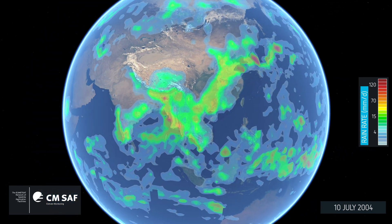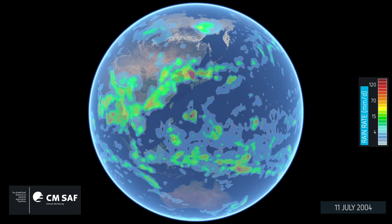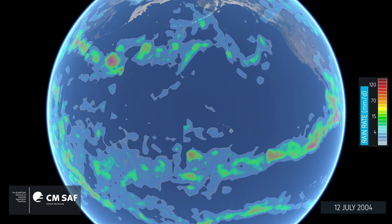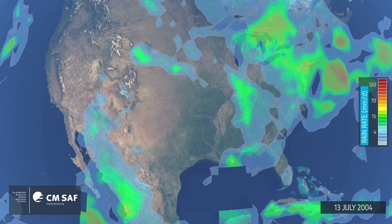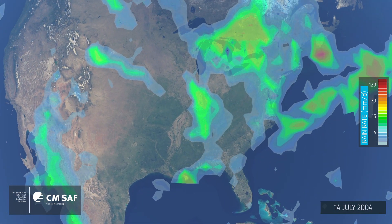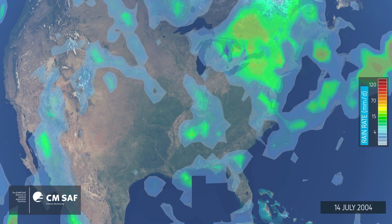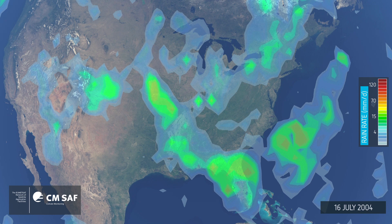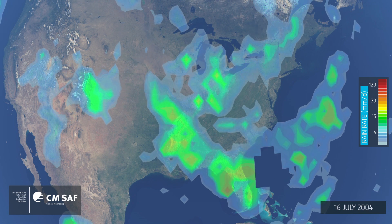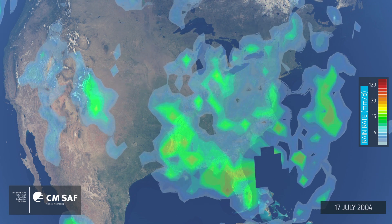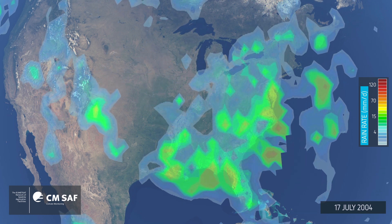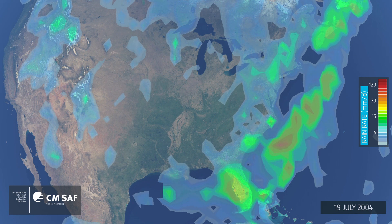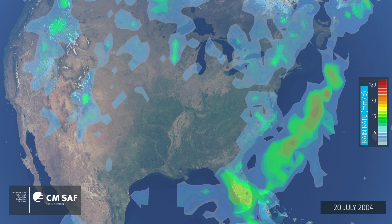Leaving the monsoon, we travel east across the Pacific to the central United States. Here we can see a cluster of storms bringing heavy rain to the Ohio Valley. You can also see in the western Atlantic a storm system there bringing rain, but that will be over the Atlantic.